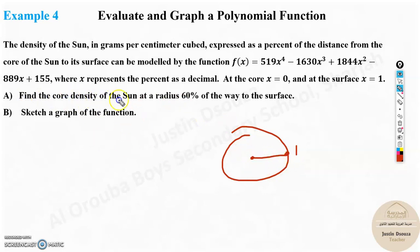Find the core density of the sun at radius 60%. So this is 0, this is 1, that's 100%. 60% means 0.6. If you solve this, percent symbol equals 1 by 100. I hope you know this.